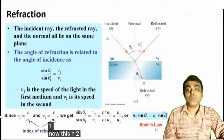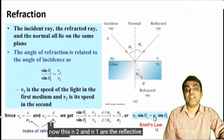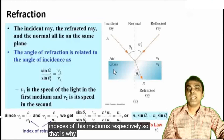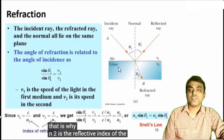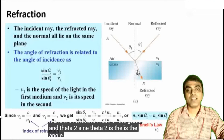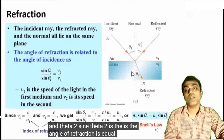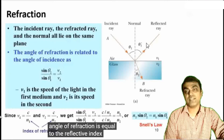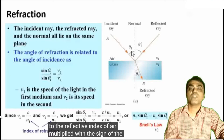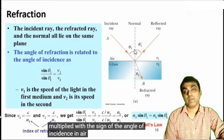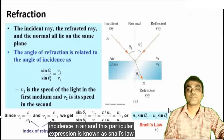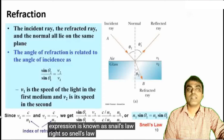N2 and N1 are the refractive indices of these mediums respectively. So N2 is the refractive index of the glass and sine theta two is the angle of refraction, equal to the refractive index of air multiplied by the sine of the angle of incidence in air. This particular expression is known as Snell's law.